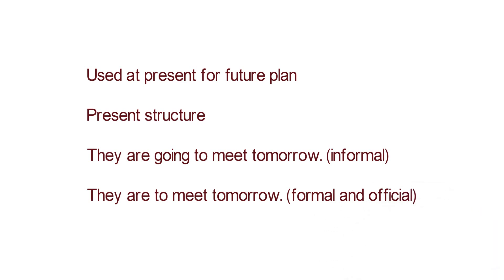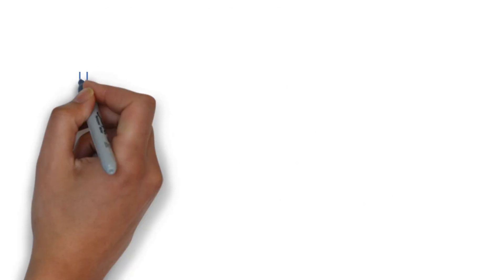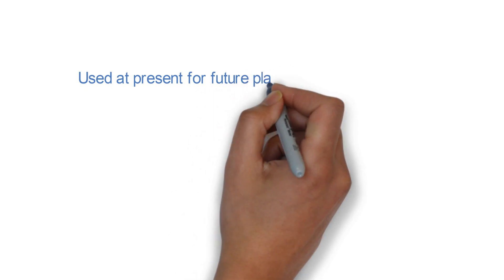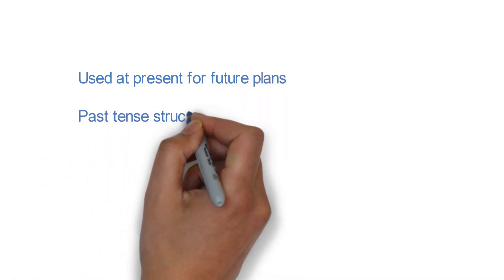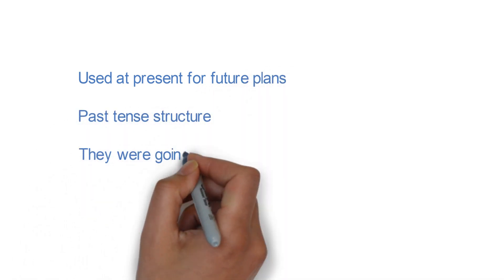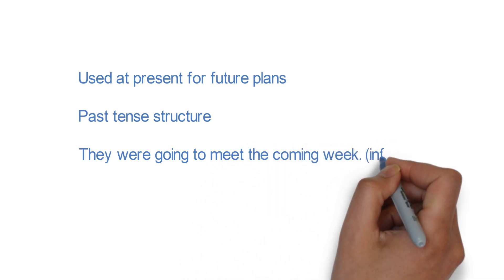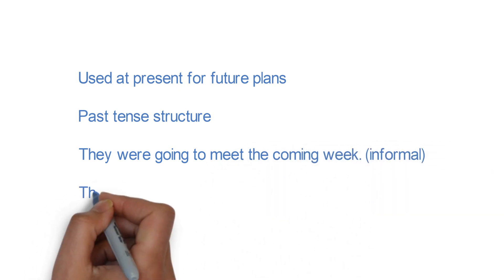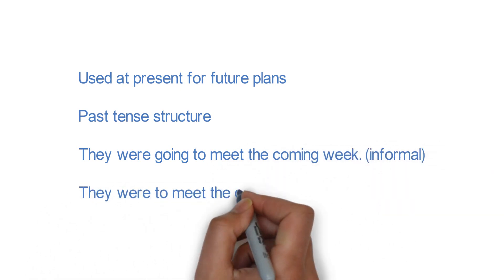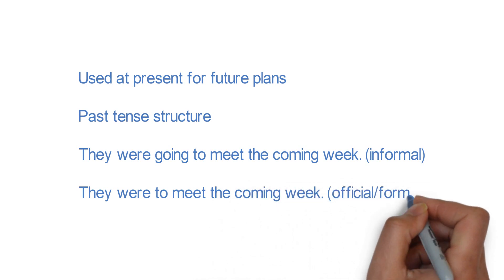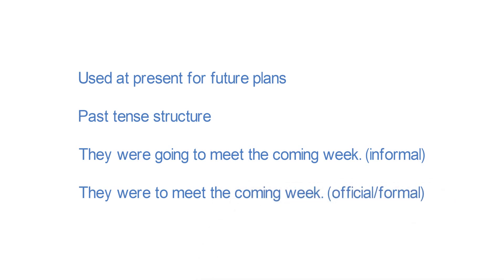Both structures are also used in the past tense for future plans. 'They were going to meet the coming week' is the informal structure, and 'They were to meet the coming week' is the formal and official structure.